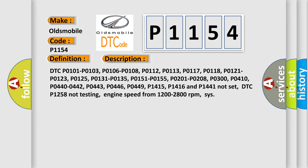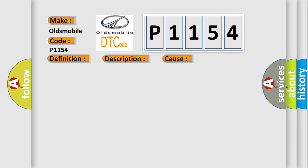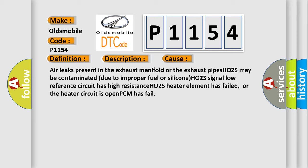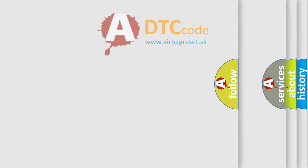This diagnostic error occurs most often in these cases: air leaks present in the exhaust manifold or the exhaust pipes; the HO2S may be contaminated due to improper fuel or silicone; the HO2S signal low reference circuit has high resistance; the HO2S heater element has failed, or the heater circuit is open; or the PCM has failed. The Airbag Reset website aims to provide information in 52 languages.